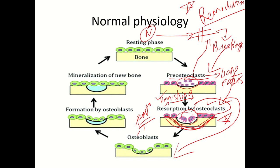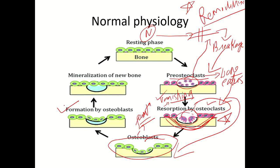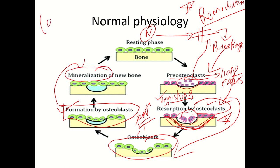Osteoclasts handle bone eating, and osteoblasts handle bone formation. Osteoblast activity is bone-forming activity. Only a few osteoblasts cannot fill the gap caused by the osteoclasts, so osteoblasts need to reproduce, leading to formation of more and more osteoblasts. This leads to the next step: mineralization of bone, as bone is made up of calcium hydroxyapatite.